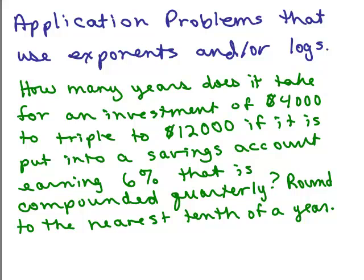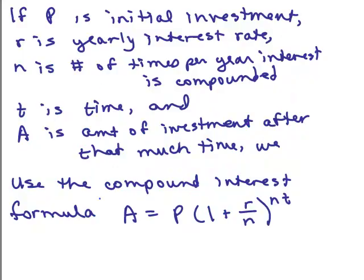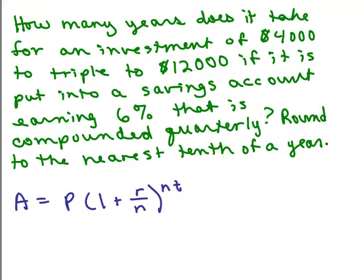All right, we're going to do a word problem that uses exponents and logs. In this video, we're going to do this investment problem, seeing how long it takes for an investment to triple. First we have to know the compound interest formula: A equals P times 1 plus r over n to the nt. Here's our problem: How many years does it take for an investment of $4,000 to triple to $12,000? It's put in a savings account earning 6% interest that is compounded quarterly. Quarterly means 4 times a year. We're going to round our answer to the nearest tenth of a year.